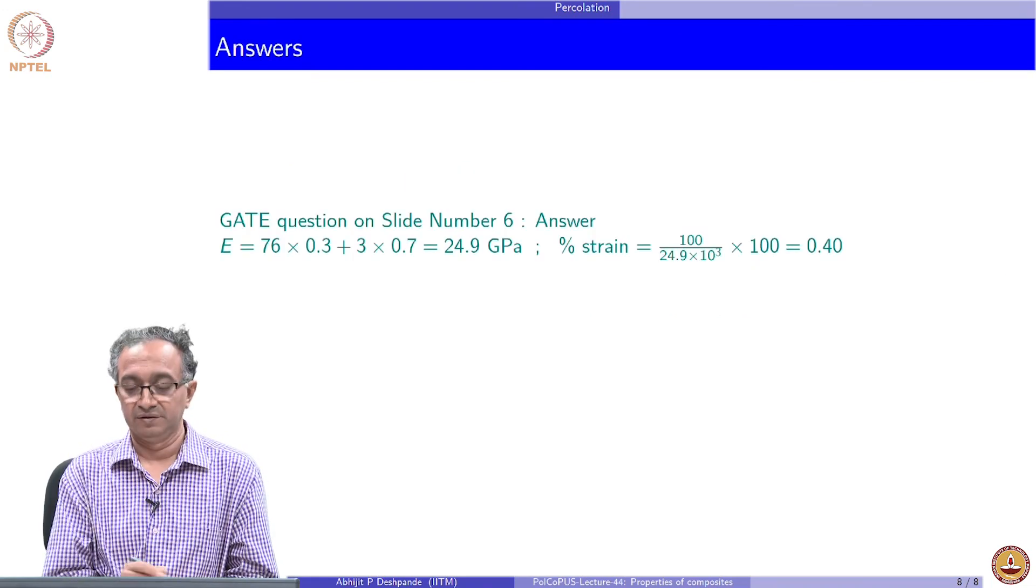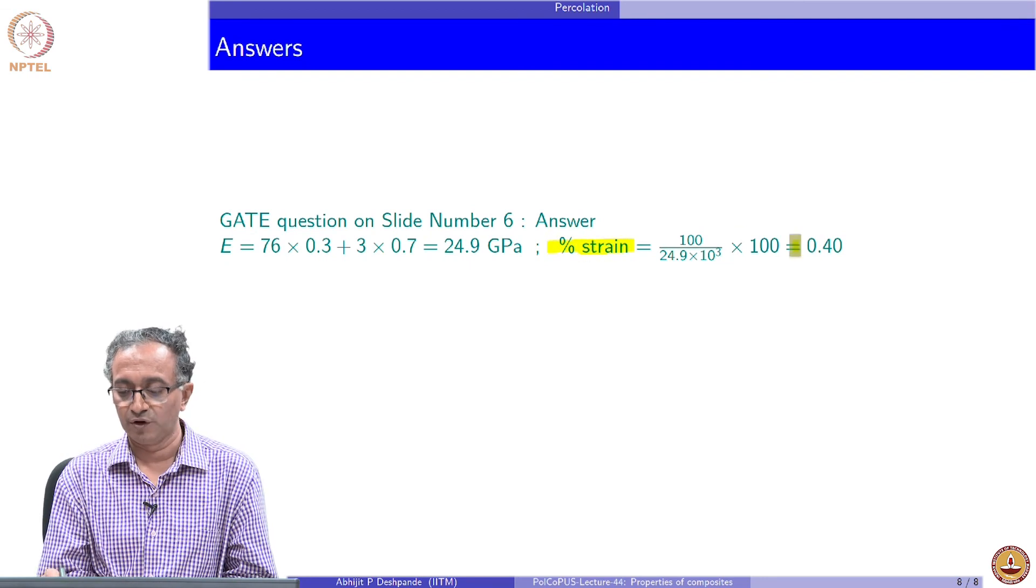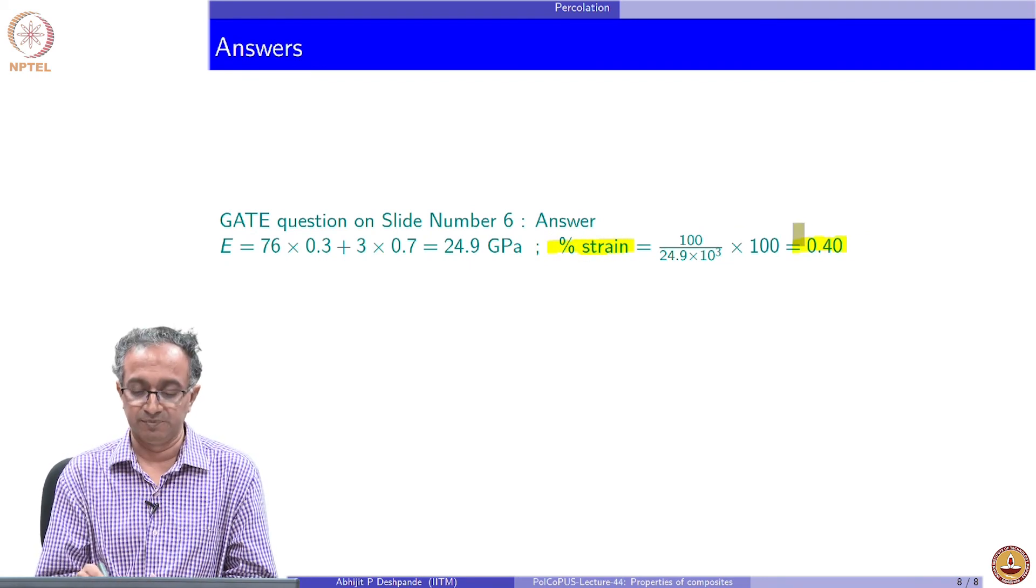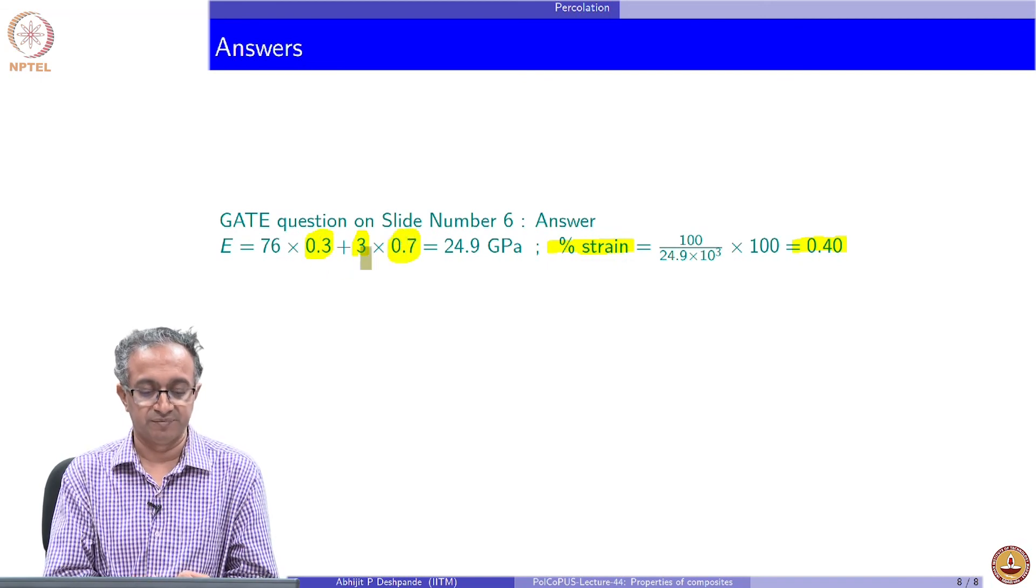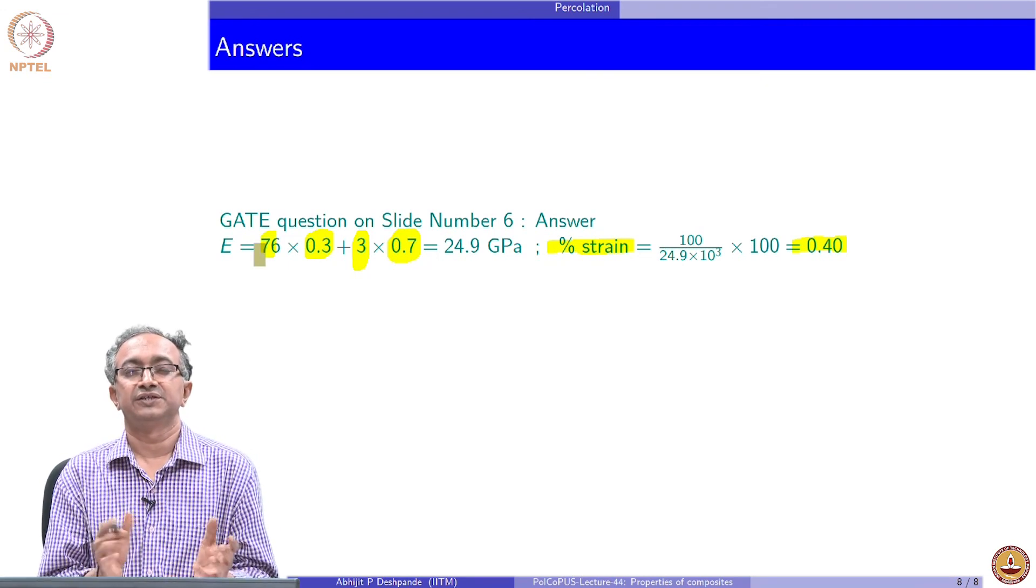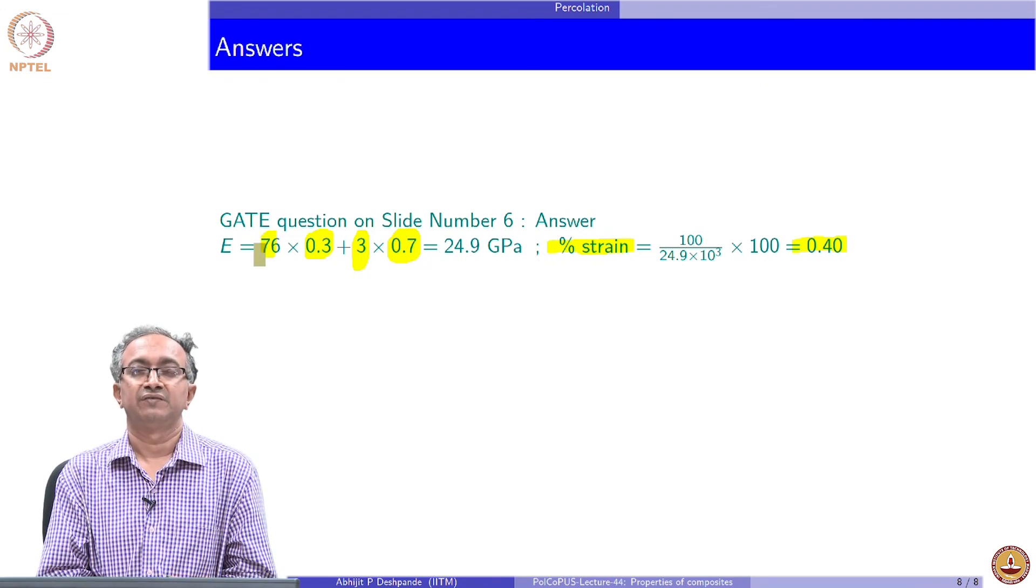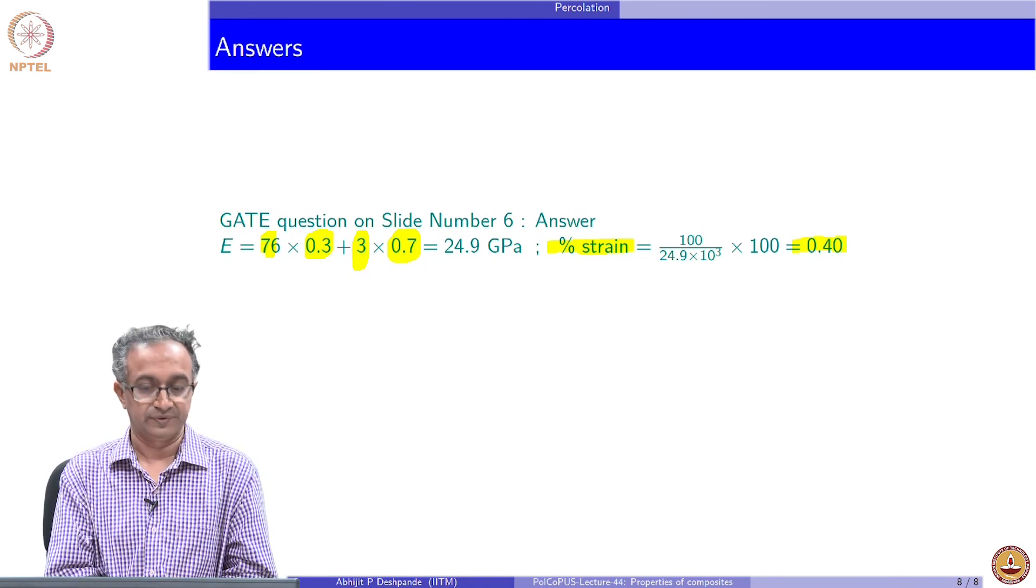With this, I am sure you can, looking at the mixing rule, calculate the overall percentage strain that is possible and it just depends on what is the volume fraction 0.3 and 0.7 that is added and the properties of matrix and the fiber. With this, we will close this lecture and we will continue our journey for exploring more properties of polymers in a lecture later on. Thank you.